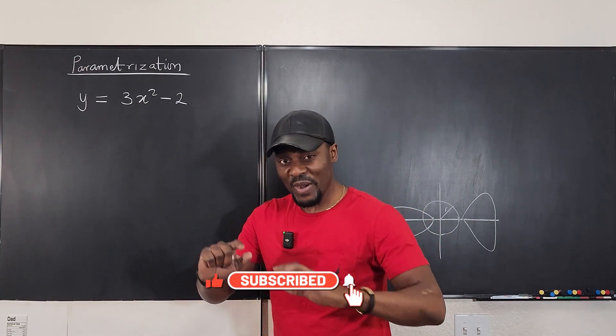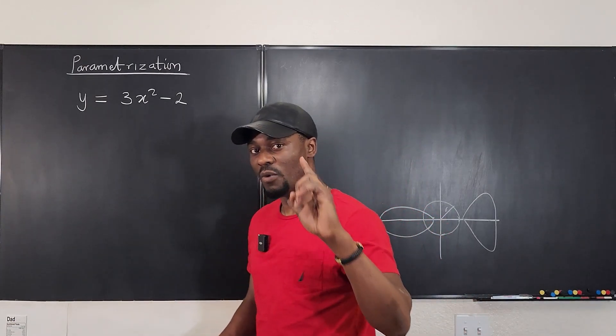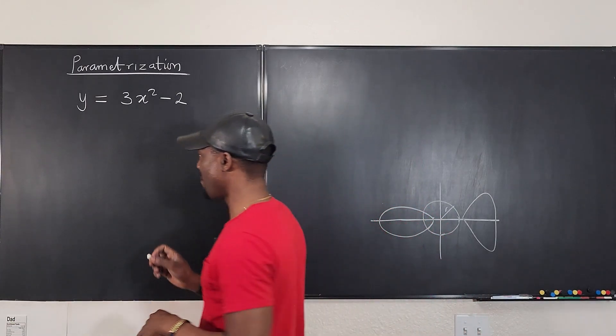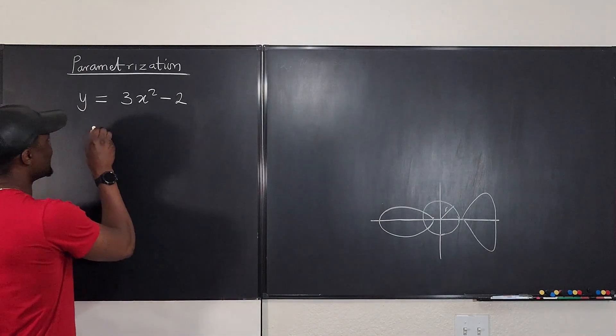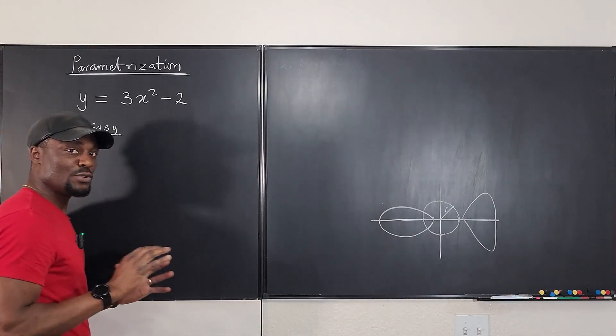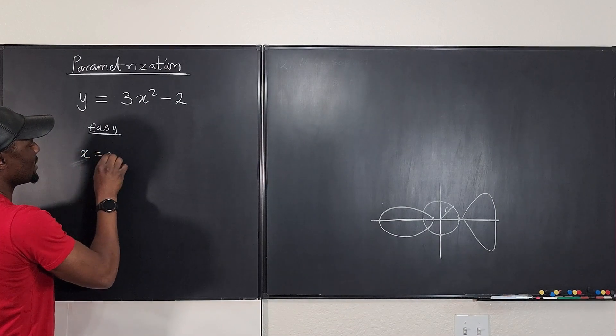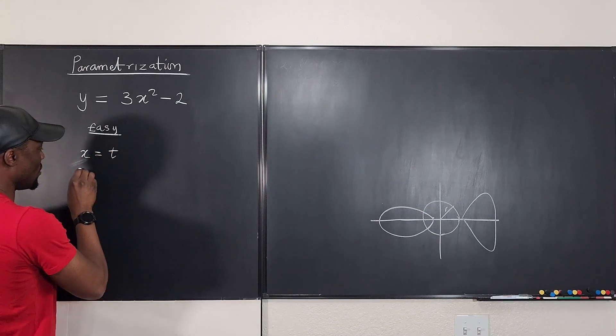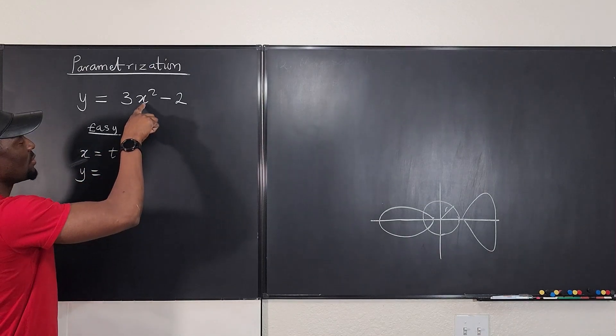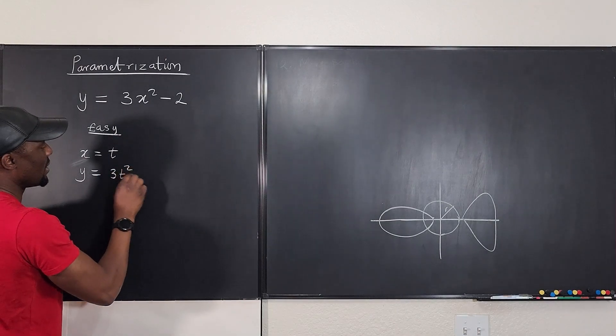Let's look at the easiest way. So mode one, which is mode easy. I'm just going to replace x with the parameter. I'm going to say x is equal to t. So y will be equal to, I'm going to replace x with t, so it's going to be 3t squared minus 2.